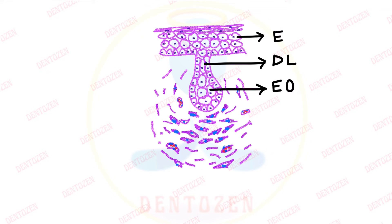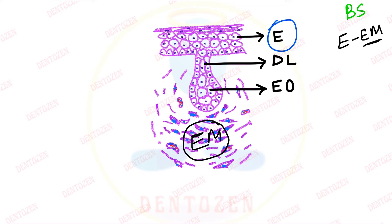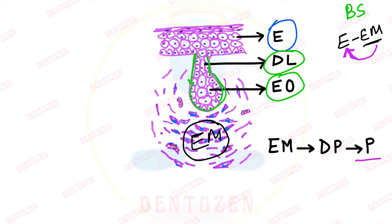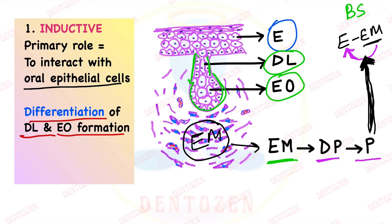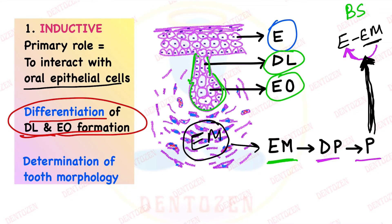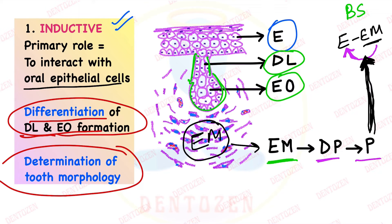The first function of the pulp is related to tooth development. If you remember this diagram from the bud stage, we have two important tissues: epithelial tissue and ectomesenchymal tissue below the epithelium. There is an interaction between them where the ectomesenchymal tissue sends signals to the epithelial tissue, inducing it to proliferate to form the dental lamina, which further leads to formation of the enamel organ. Pulp forms from the dental papilla, which comes from ectomesenchymal tissue, so indirectly pulp has an inductive role on the epithelium. This interaction also helps in determination of tooth morphology.